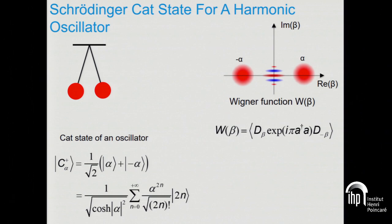Since this is quantum mechanics — when you have one state and you can make another, you can add them. So you can define states which oscillate with a plus phase and a minus phase and add them together. This is what we call a cat state, because it's in a superposition of two macroscopic states. You can decompose it over Fock states and find that it only has even photon numbers populated — this is why we call it an even photon number state.